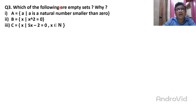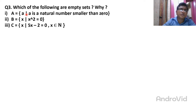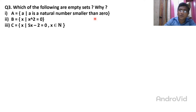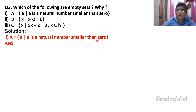Which of the following are empty sets? They are giving three examples, and from those examples you want to identify which is the empty set. Set A is the set of 'a' such that 'a' is a natural number smaller than 0. You know very well that the smallest natural number is 1.